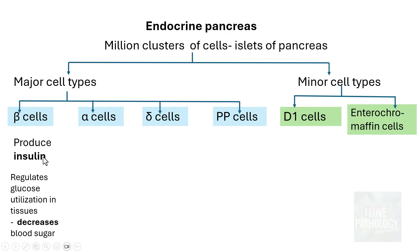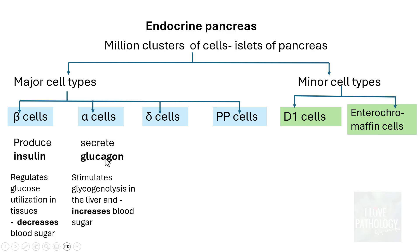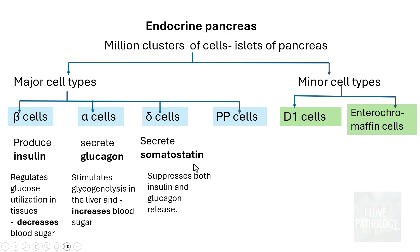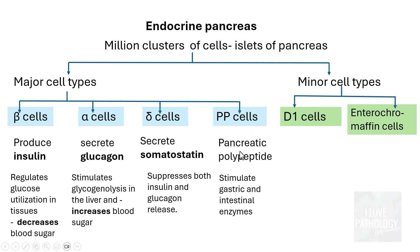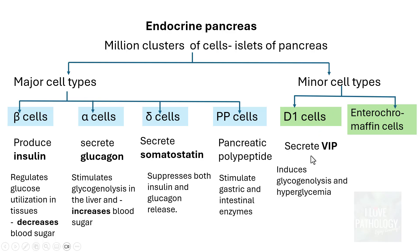The beta cells are the ones which produce insulin, which regulates glucose utilization in tissues, thereby decreasing blood sugar. Alpha cells secrete glucagon — they stimulate glycogenolysis in the liver and increase blood sugar levels. The delta cells secrete somatostatin, which suppresses both insulin and glucagon. The PP cells secrete pancreatic polypeptide and stimulate gastric and intestinal enzymes. The D1 cells secrete vasoactive intestinal polypeptide, which induces glycogenolysis and hyperglycemia, whereas enterochromaffin cells secrete serotonin.